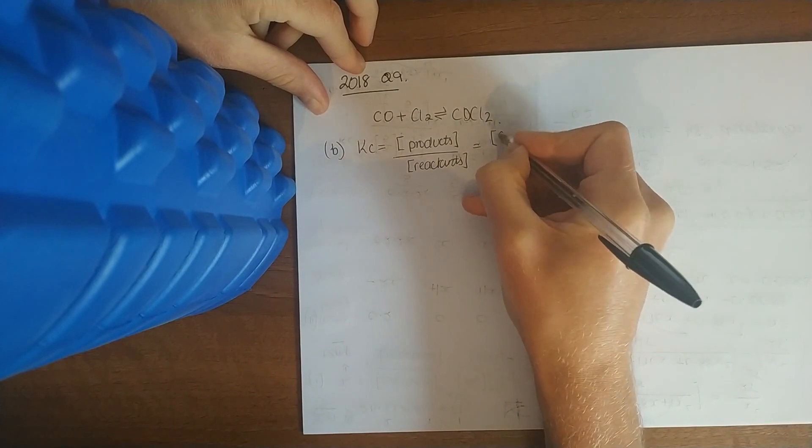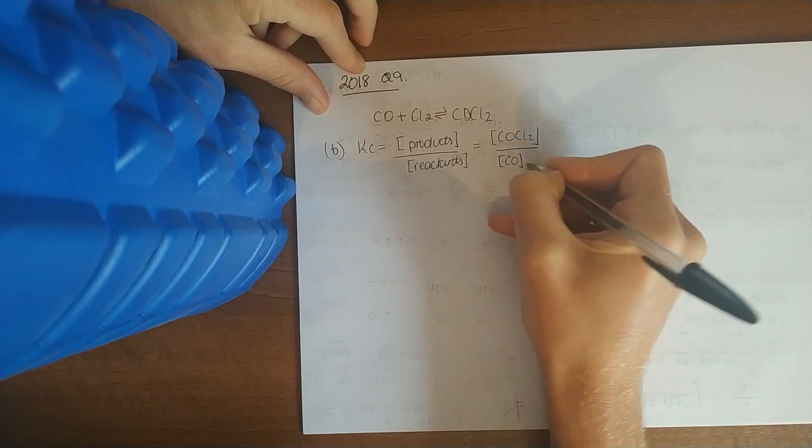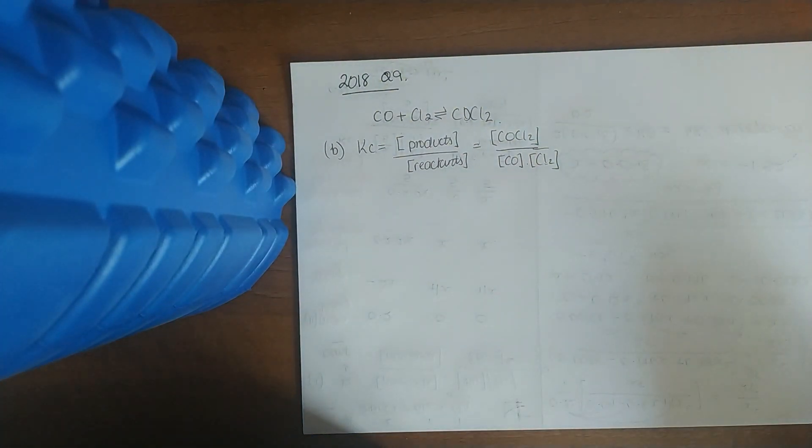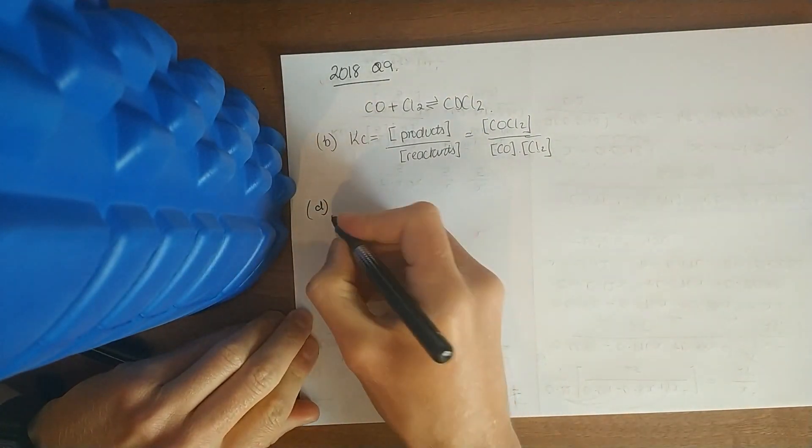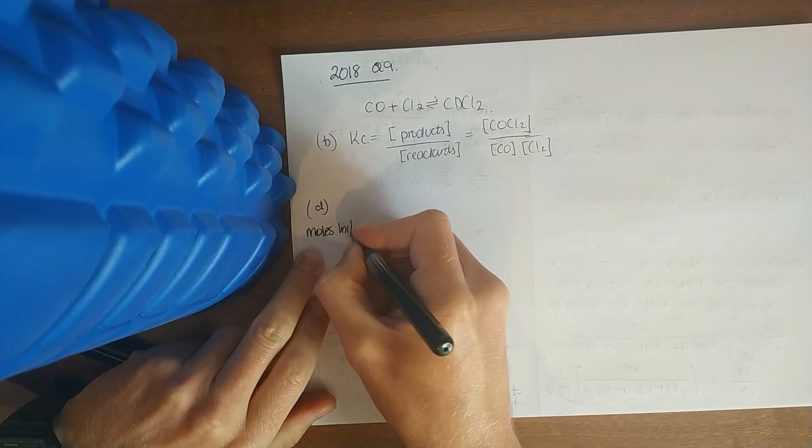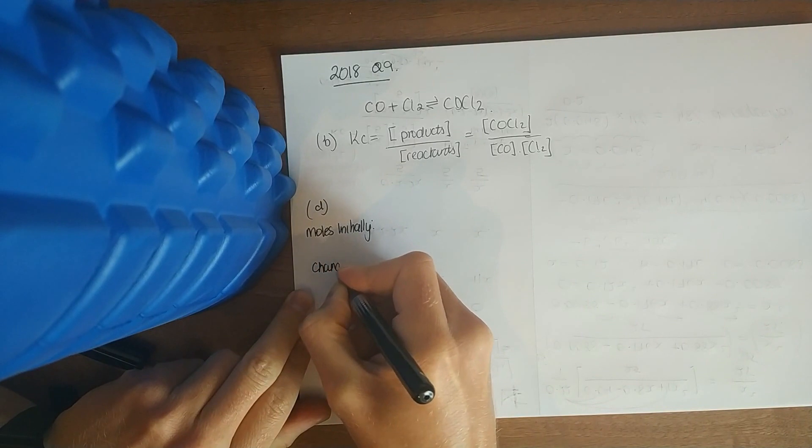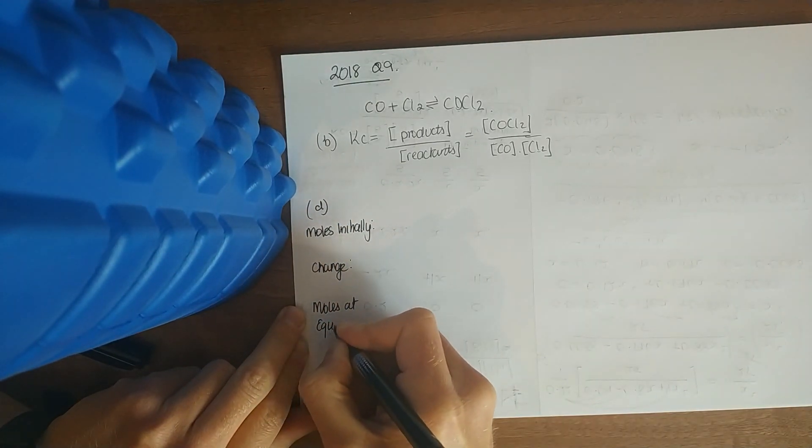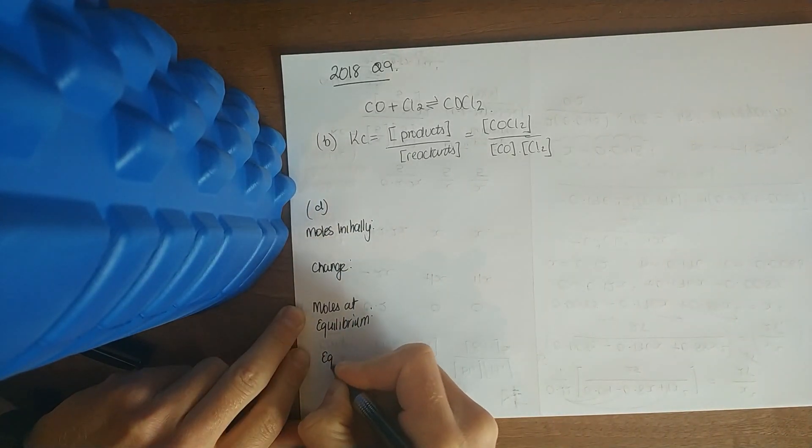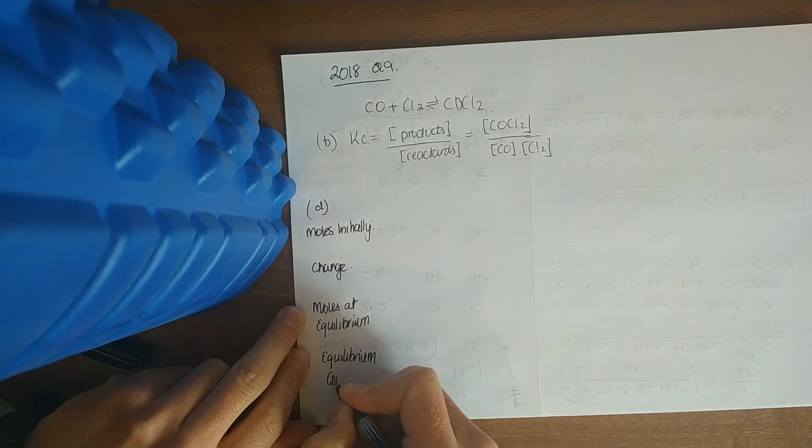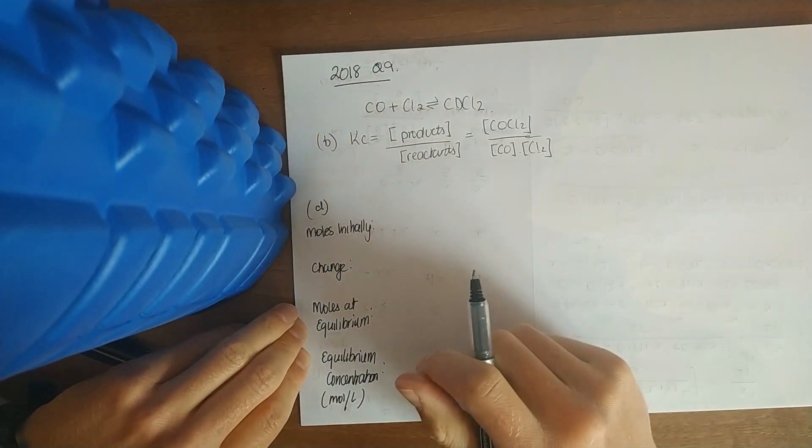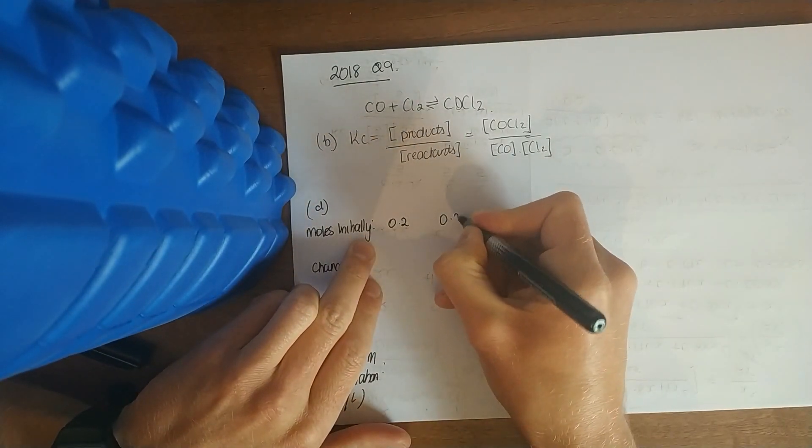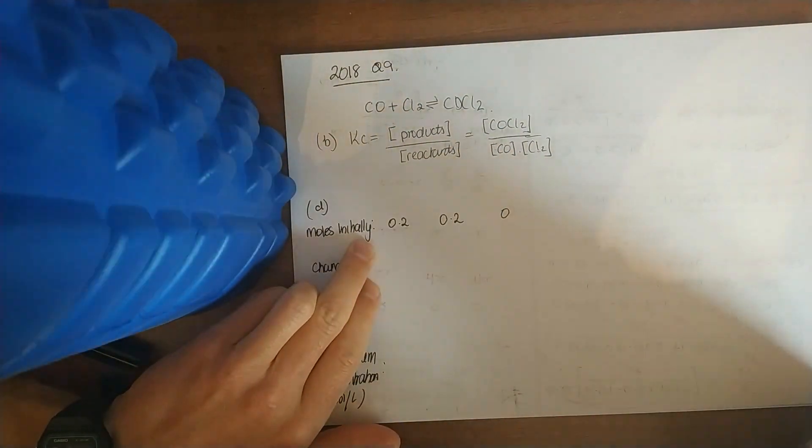Now we're on part D, the calculation. Before I even start, give yourself plenty of room. So moles initially, change, moles at equilibrium, and equilibrium concentration, that's just in moles per liter. A 12 liter container filled with 0.2 moles of chlorine and 0.2 moles of carbon monoxide. So we're starting out with 0.2, 0.2, and 0 of my COCl2. You can put this on a grid, maybe it might make it easier. So there is my CO plus Cl2 gives COCl2.